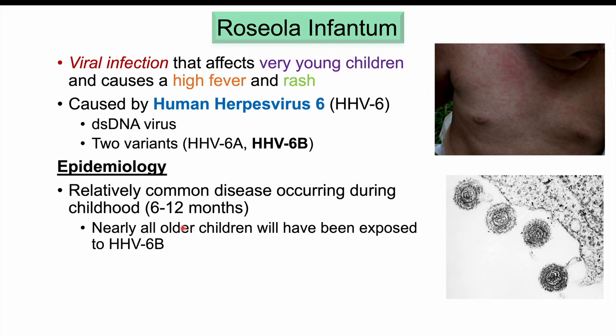This condition is so common that nearly all older children will have been exposed to HHV6B. By adulthood, nearly 100% of people have been exposed to this virus. Some sources say that by 12 months of age, 44% of young infants have been exposed, and by the age of 2 years old, 77% have been exposed.